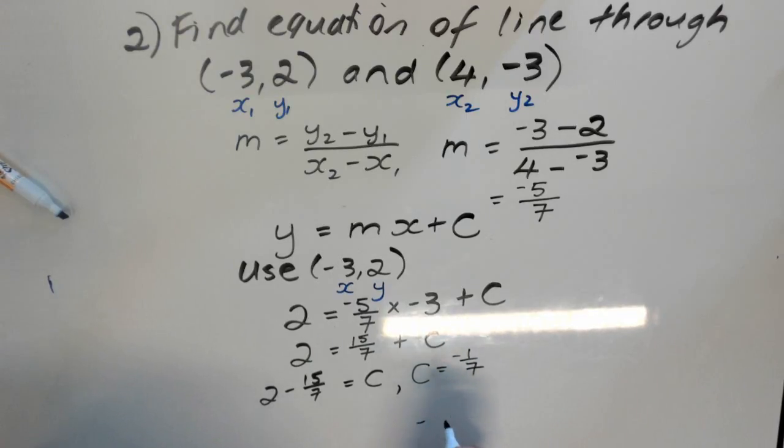And then, finally, we write our equation. Our equation goes, y equals negative 5 over 7, x. Don't forget the x. Minus 1 seventh.